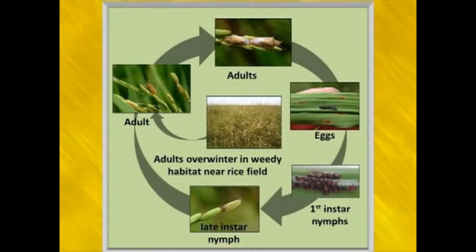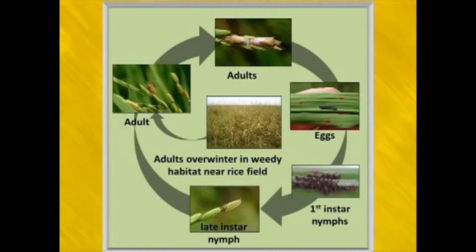Nymphs are going to emerge from the egg as the first instar. They pop out of the little egg capsule and start moving around on the plant. From the first instar stage all the way through to the adult stage, they will have the ability to damage the crop by feeding on those developing grains, feeding on the panicle as the grains are maturing.